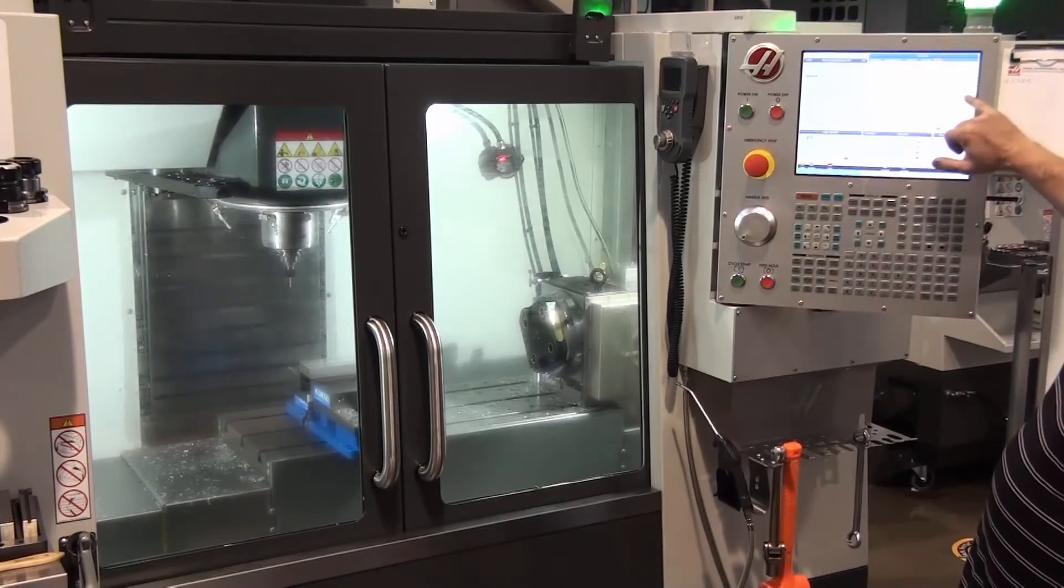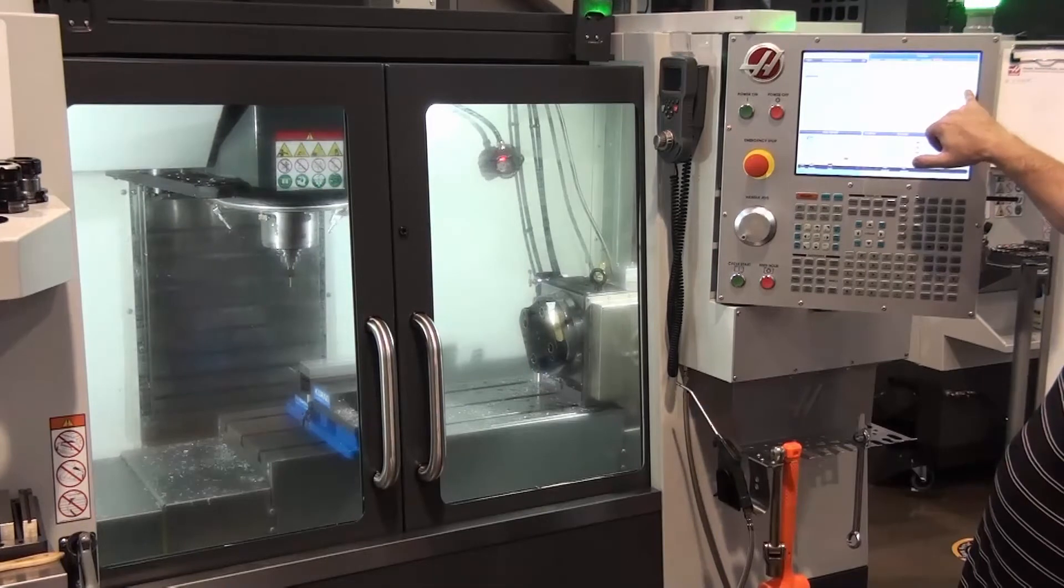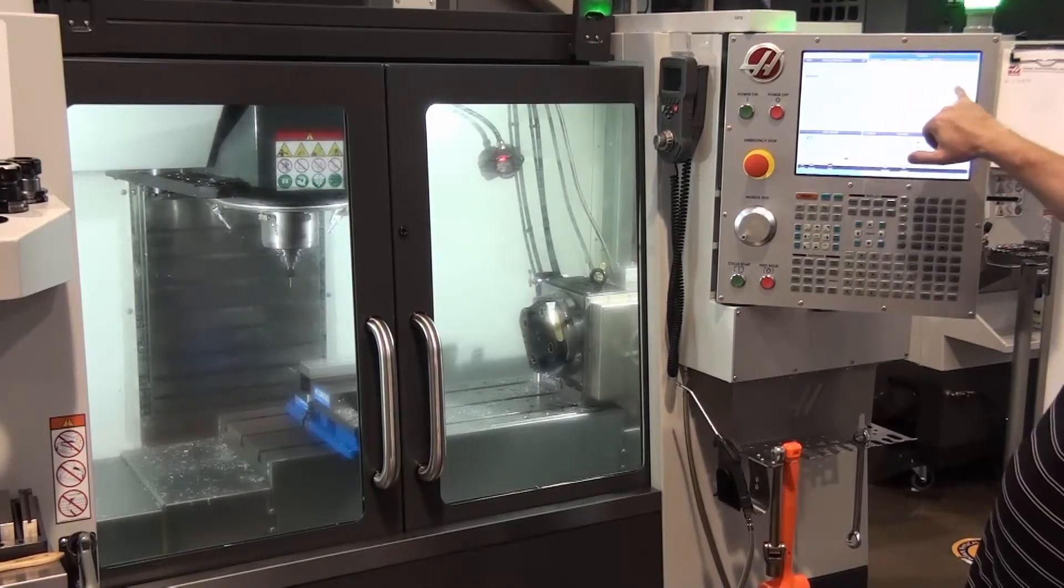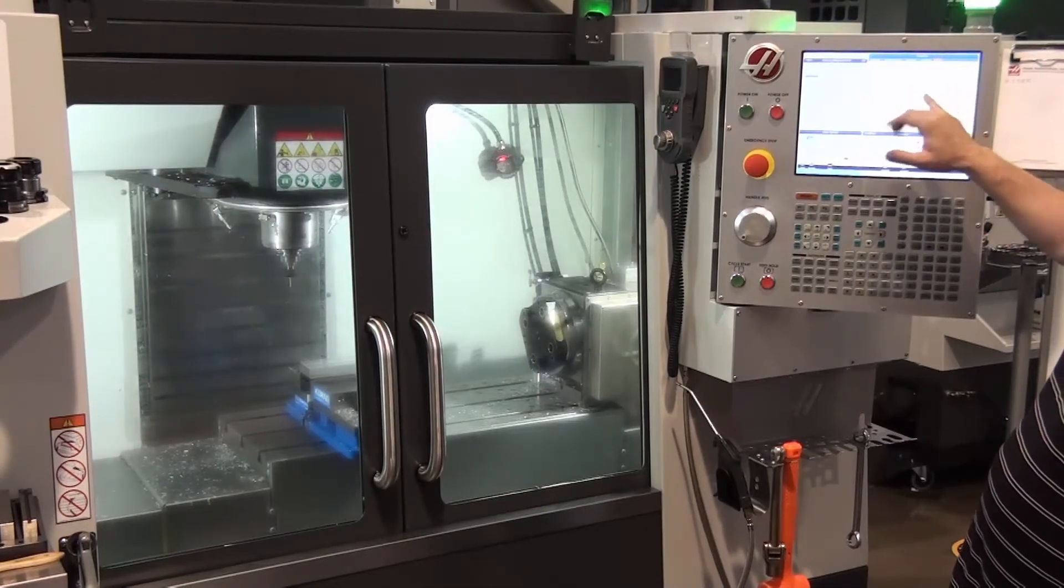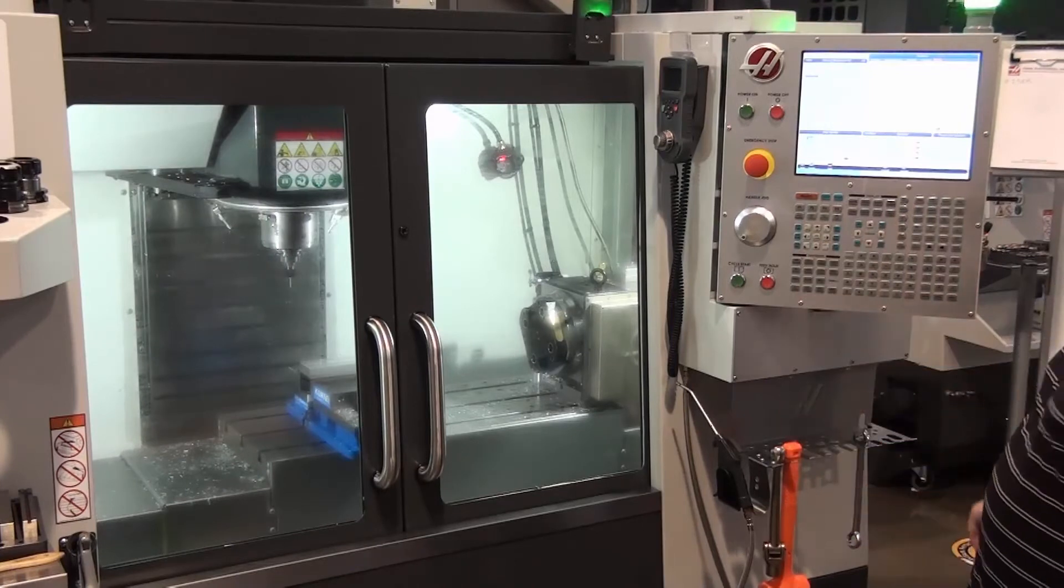I like to keep an eye on the Z for my G54 because that's how far I am above my part. And I also like to keep an eye on distance to go. So if I take this minus this, I should end up with two inches. That's what the program says.